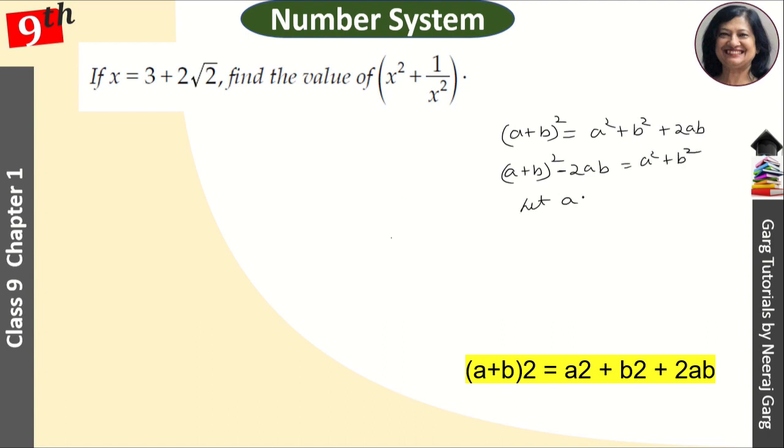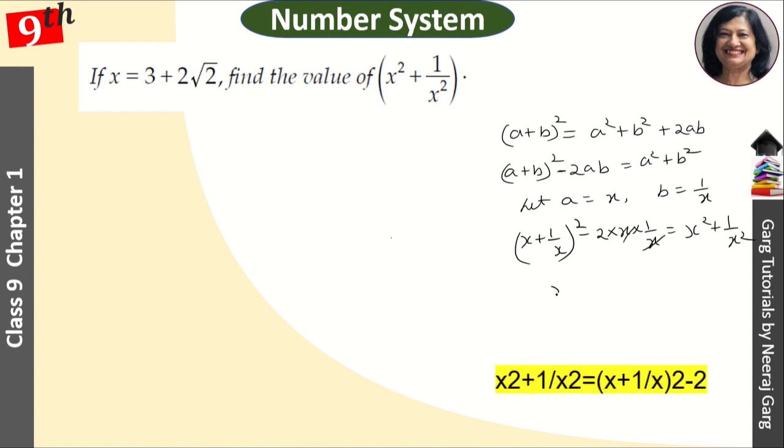Now, let's say that a is equal to x and b is equal to 1 upon x. So, we have value put here. So, this is x plus 1 upon x square minus 2 into x into 1 upon x is equal to x square plus 1 upon x square. This is cancelled. So, let's say that x square plus 1 upon x square is equal to x plus 1 upon x whole square minus 2. Just remember, this is our identity.